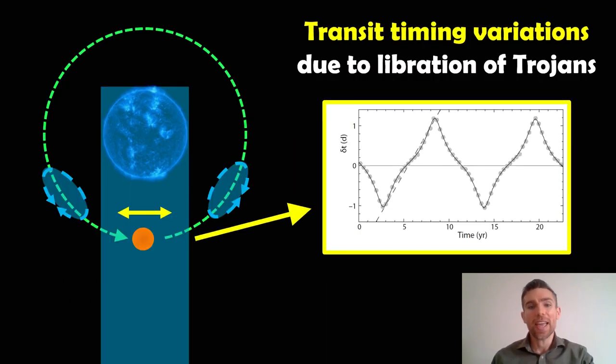However, if we do have objects at these L4, L5 Lagrange points, then you can get transit timing variations due to this movement of those objects. So those objects are orbiting around or moving around the L4, L5 Lagrange points. And because the mass distribution is changing around on its orbit, it can slightly alter when that exoplanet transits. It can make it slightly early or slightly late.